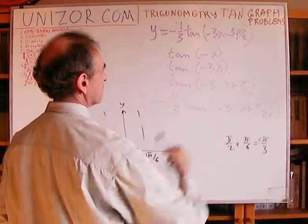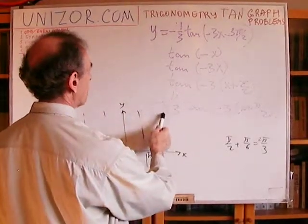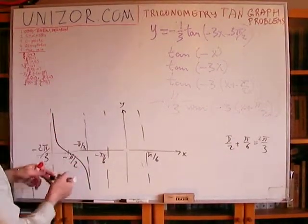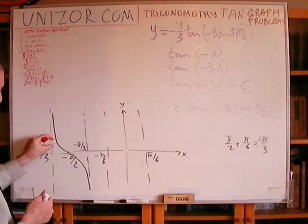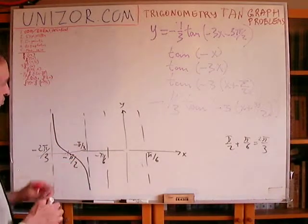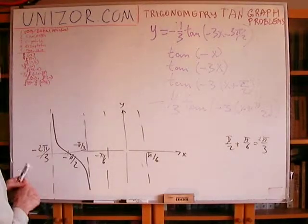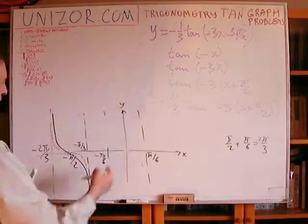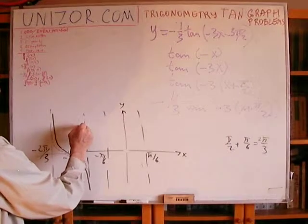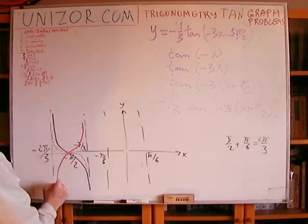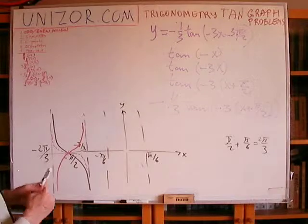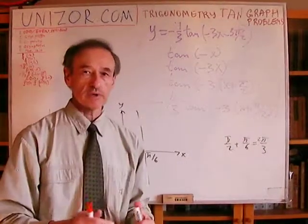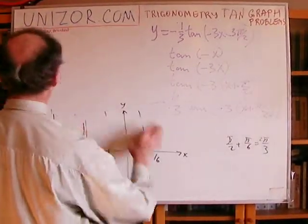The period is retained when we shift. Finally, I multiply by -1/3. That means every ordinate is reduced by a factor of 3, and the minus sign inverts the graph. So it is both compressed vertically and flipped. That is the final shape of the graph, repeated every π/3.